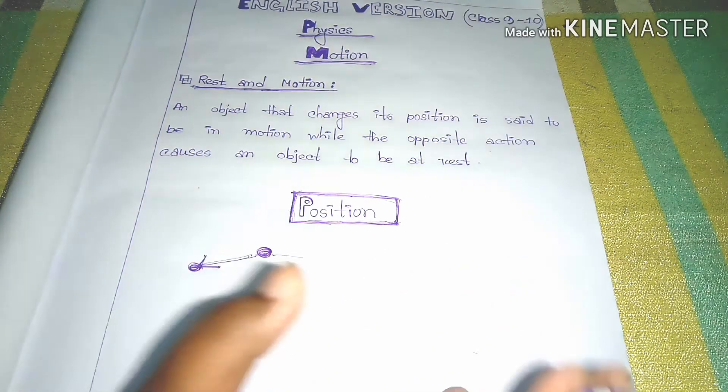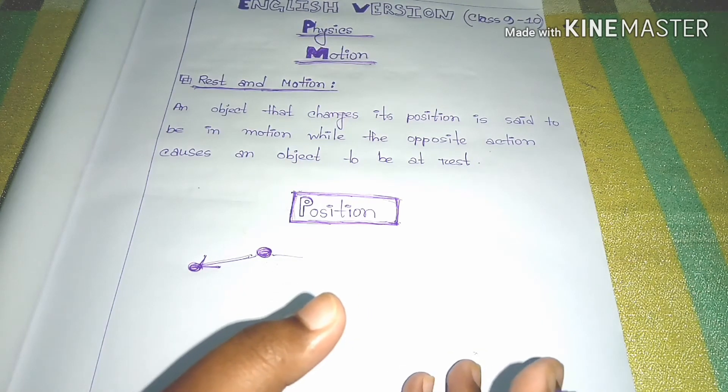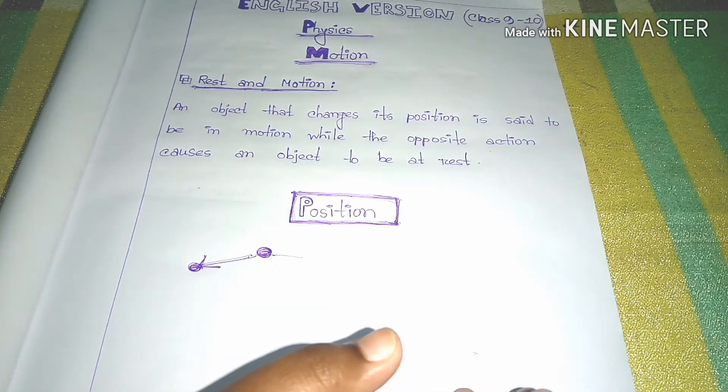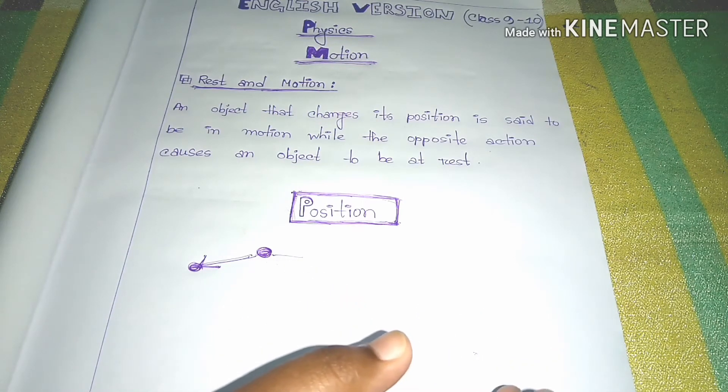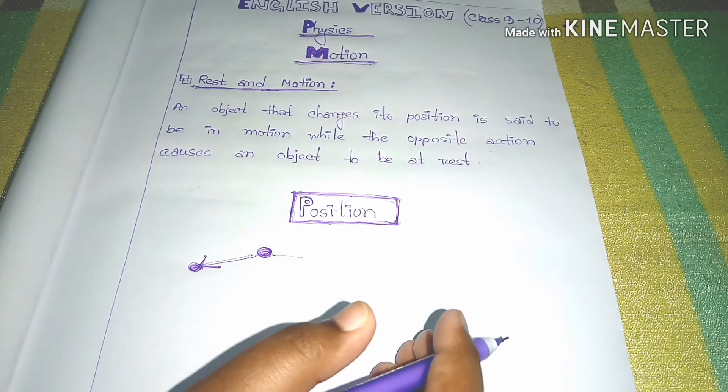Therefore we can say if an object changes position with respect to an origin, then the object is in motion with respect to that origin.